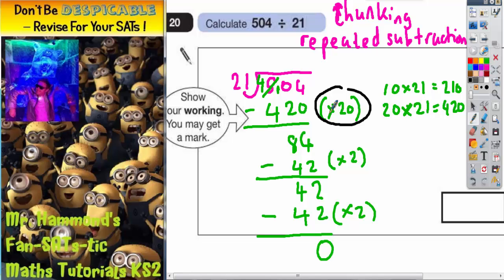So we had a chunk of 20, a chunk of 2, and another chunk of 2. So we've got 20 plus 2 plus another 2. 20 plus 2 plus 2 is 24. So there must be 24 lots of 21 in 504. And that is your final answer. 24.